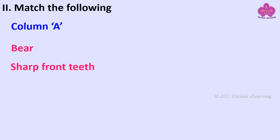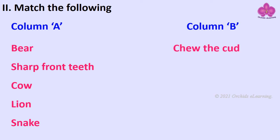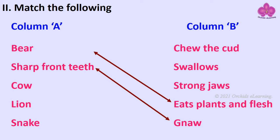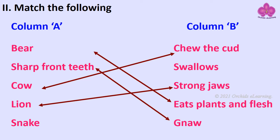Match the following. Column A and Column B: Snake – gnaw; Cow – chew the cud; Bird – strong jaws; Lion – swallows.